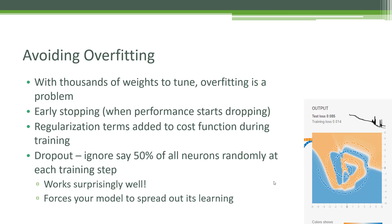A surprisingly effective technique is called dropout, and it's an example of a very simple idea that is very effective. The idea is just to ignore, say, half of the neurons randomly at each training step — pretend that they don't exist at all. The reason this works is because it forces your model to spread out its learning. If you're taking away half of its brain at each training step, you're going to force the remaining half of those neurons to do as much work as possible. This prevents individual neurons from taking on more of the work than they should. You even saw in the TensorFlow Playground that sometimes neurons were barely used at all — dropout would have forced those neurons to be used more effectively.